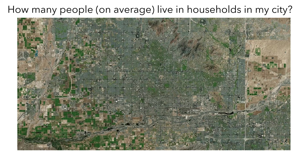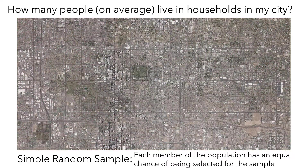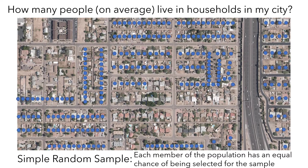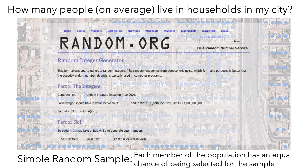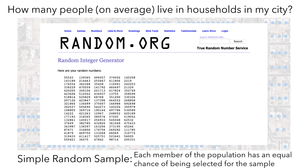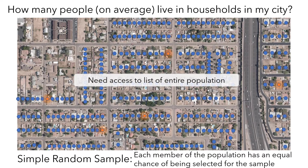The ideal method for generating a representative sample is called a simple random sample, where each member of the population has an equal chance of being selected. What we need to do is assign a number to each household, then use a random number generator like the one from random.org. You'd enter the number of households you'd like to survey and the total number of households in the city, get a list of randomly selected numbers, and then visit those randomly selected households to ask how many people lived there.